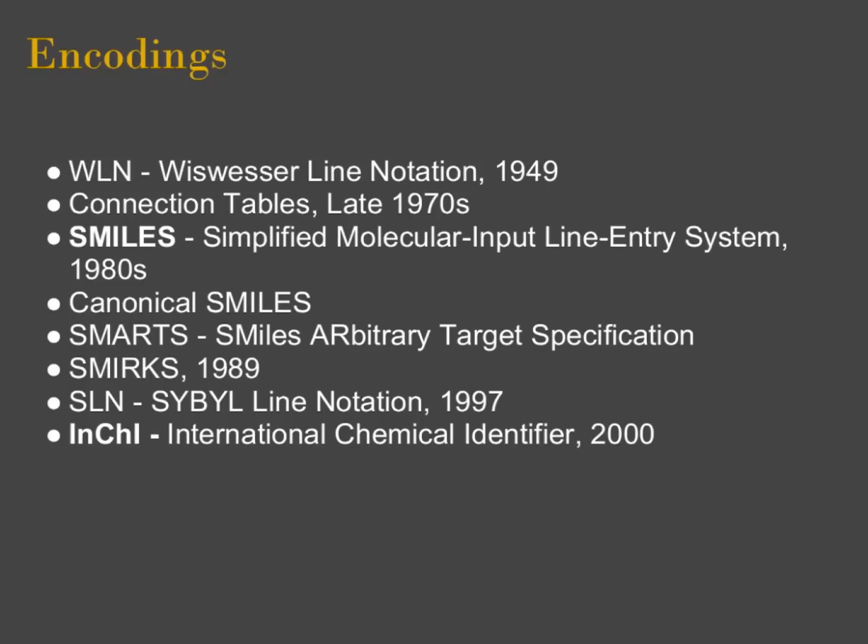There are several encodings that have been used for the last 60 or 70 years. WLN, or Wiswesser Line Notation, has been used since 1949. It's still used, but pretty outdated and a little antiquated for the modern day. A lot of the other formats have replaced it.